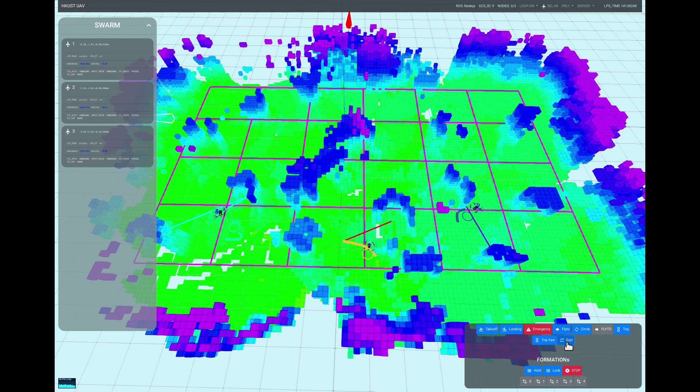As a summary, at close distances, aerial swarms need high-precision relative localization, while for longer distances, global consistency is more important.